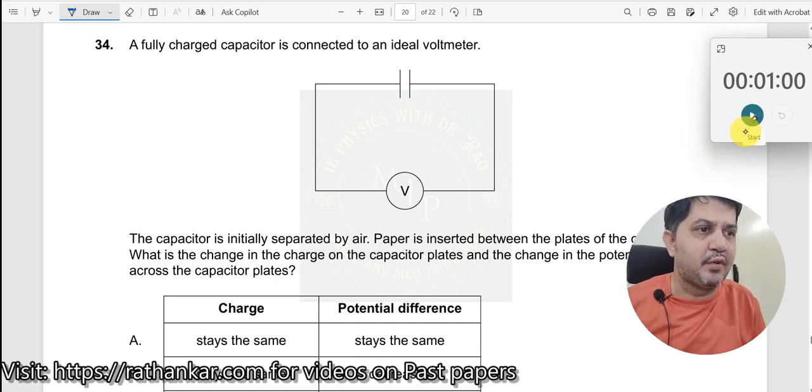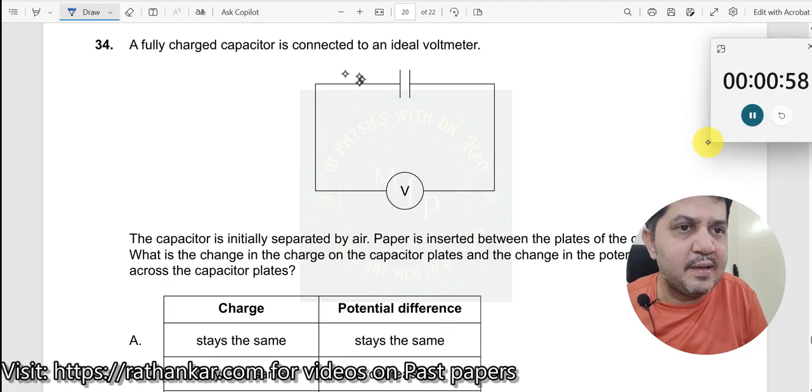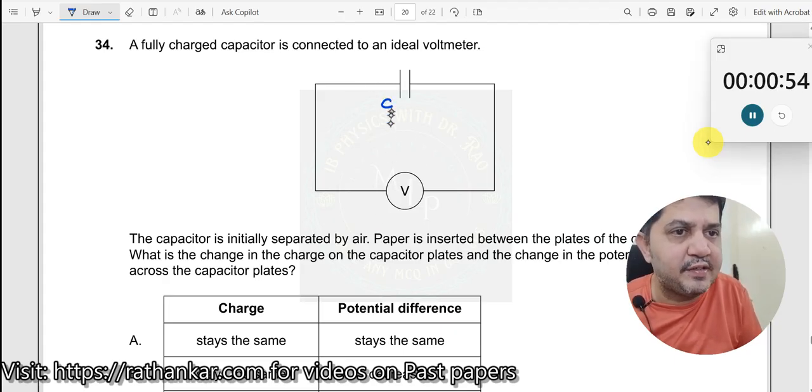Question No. 34. A fully charged capacitor is connected to an ideal voltmeter. There is no battery, only a capacitor is kept and a voltmeter is kept.